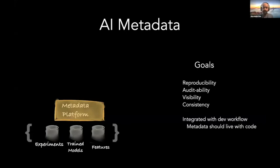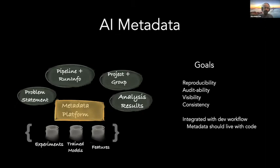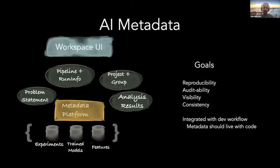A few other concepts have shown up, and the goals have always been reproducibility, auditability, visibility, and consistency of concepts. Also, you want things to be integrated with the dev workflow — if I'm checking in my stuff in Git, my metadata should be right there with it. We've added new concepts like: what's the problem statement that the experiment is about, what are the pipeline and run infos, what are the projects and groups associated with it, and what were the analysis results. All of these models have been added to the metadata model, and on top of it a workspace UI has been built targeted towards an AI persona. The metadata platform is the same, but they're able to extend it in a specific direction to support the AI metadata use case, and DataHub benefits because all of this metadata is integrated — you can search and discover everything in the same place.